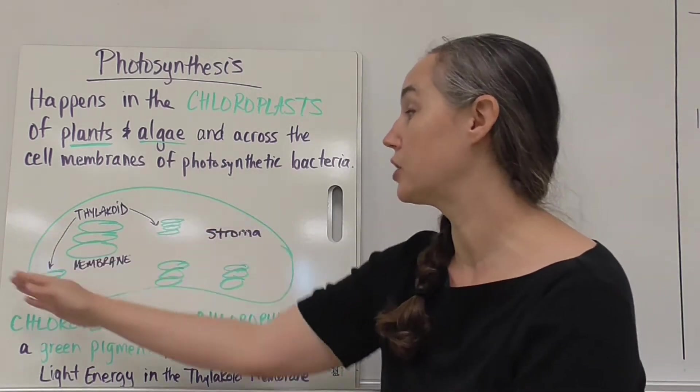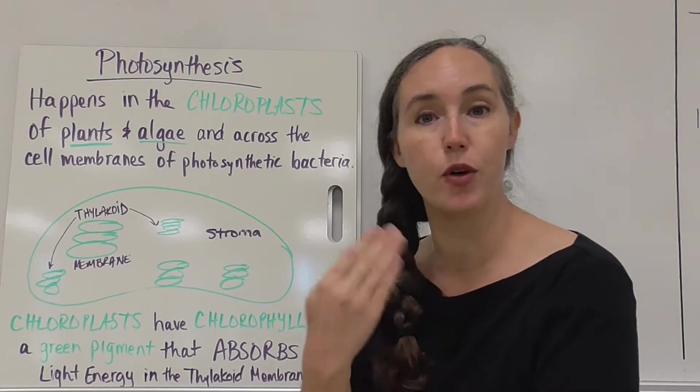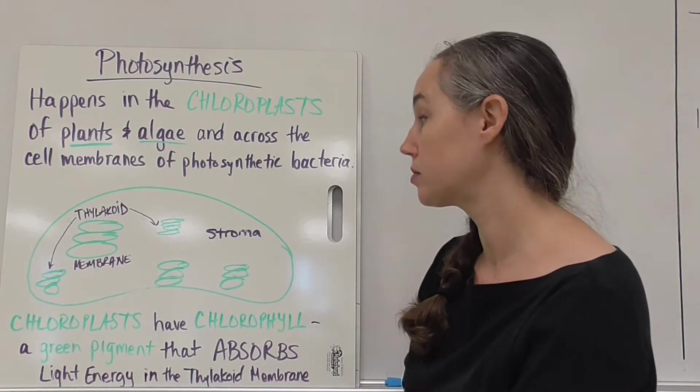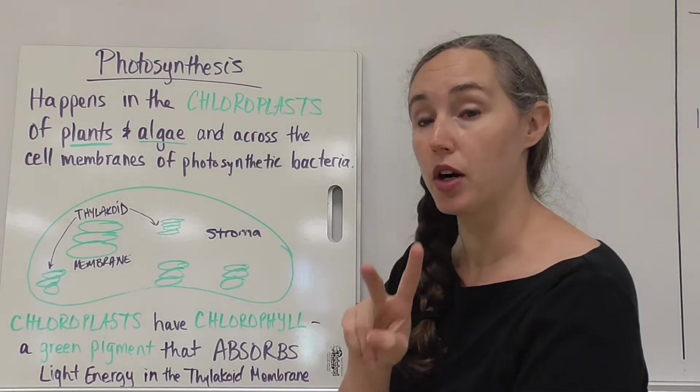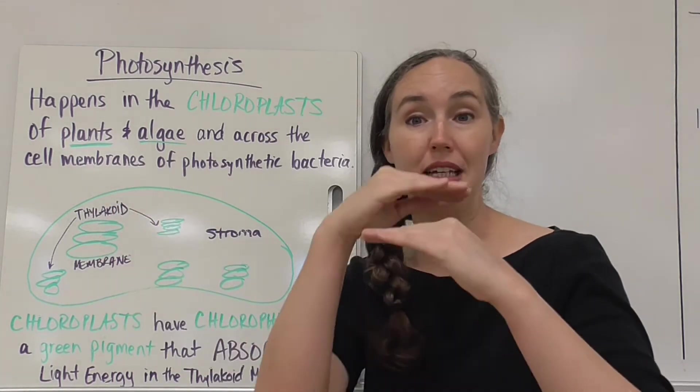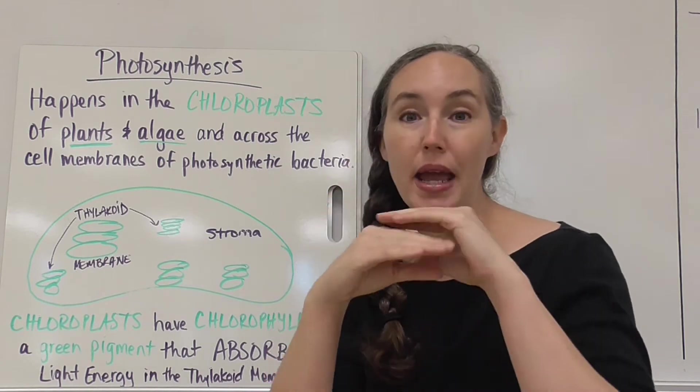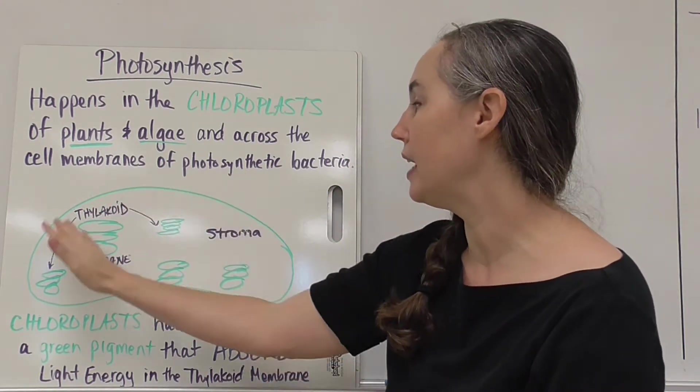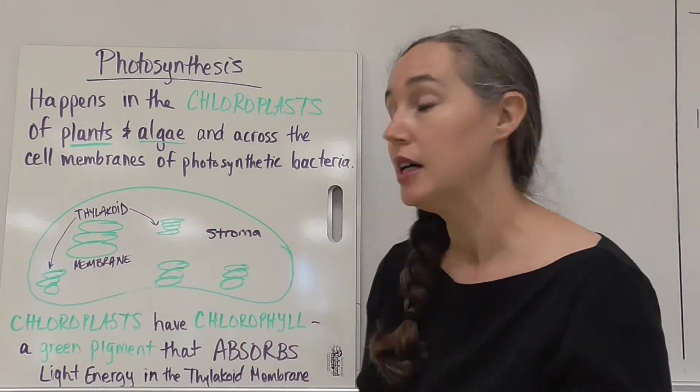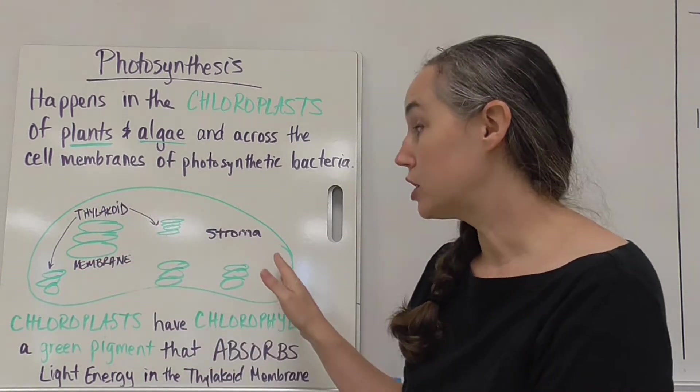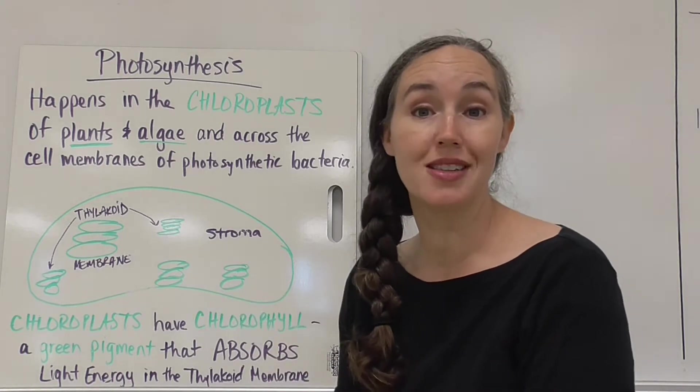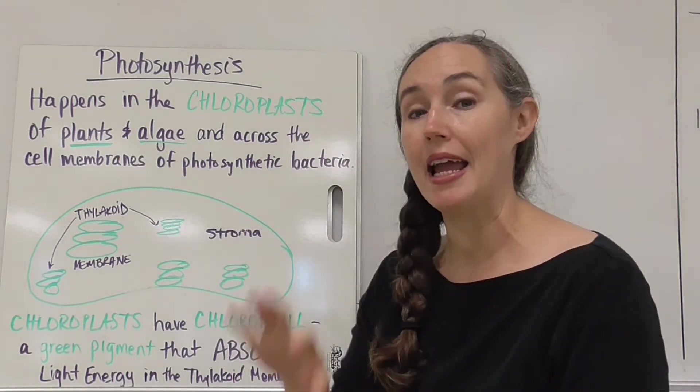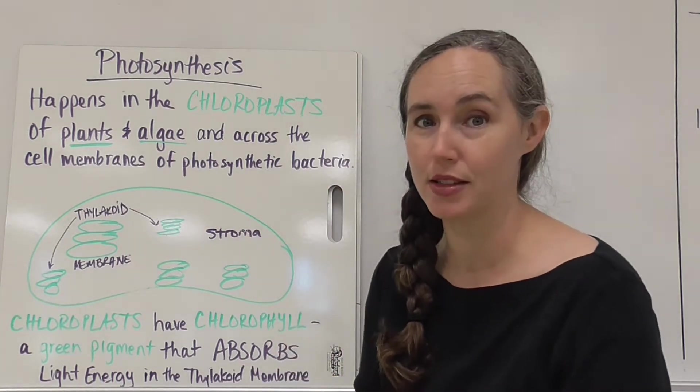This is a picture of a chloroplast. We're going to focus on the eukaryotic process as we move forward through the video. It has two major parts: the thylakoid membrane, which are these kind of pancake-like stacks of membranes inside, and then the empty space between is called the stroma. It's important to know the two different parts because photosynthesis can be broken down into two major sets of reactions and they happen in different parts of the chloroplast.